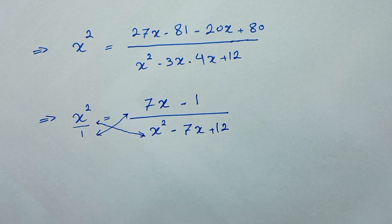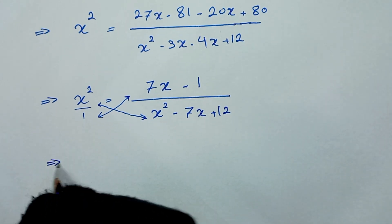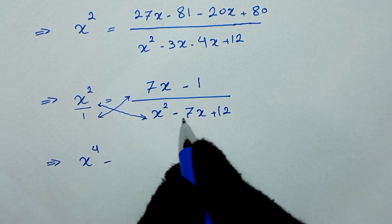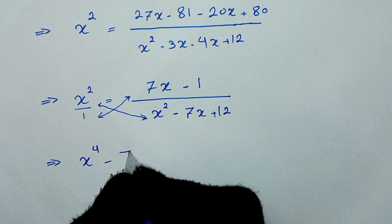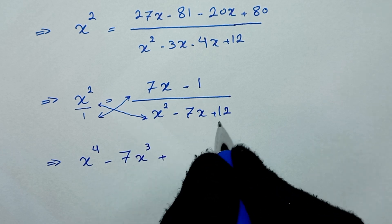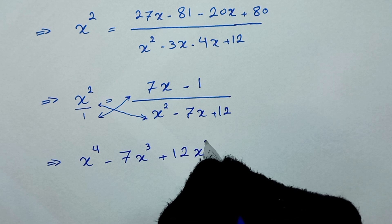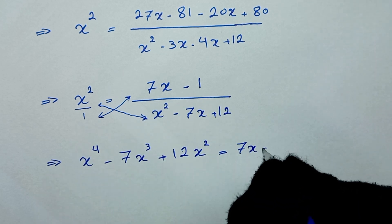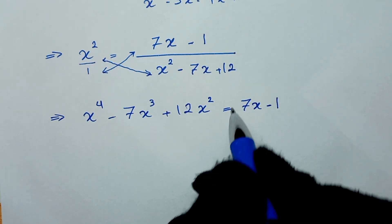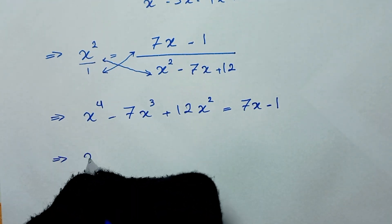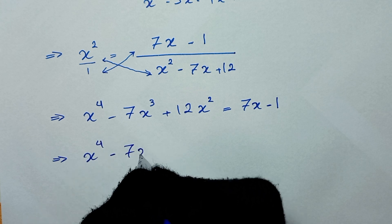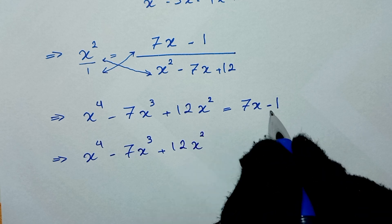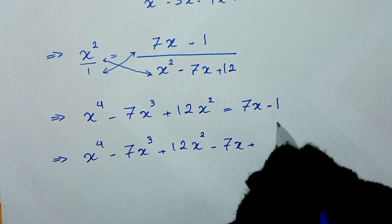Since x squared is x squared over 1, we apply cross multiplication. This gives x squared times x squared minus 7x plus 12, which expands to x to the power of 4 minus 7x cubed plus 12x squared, equal to x squared times 1 times negative 7x minus 1.